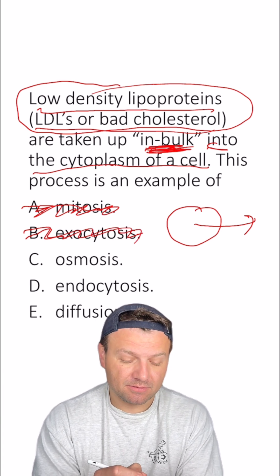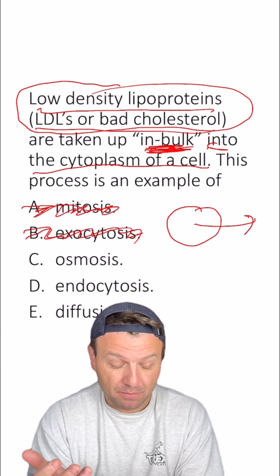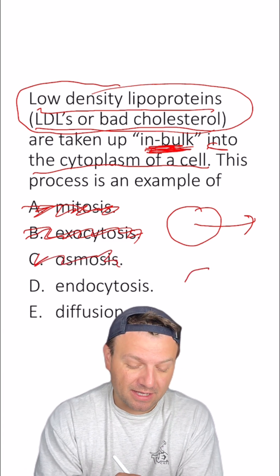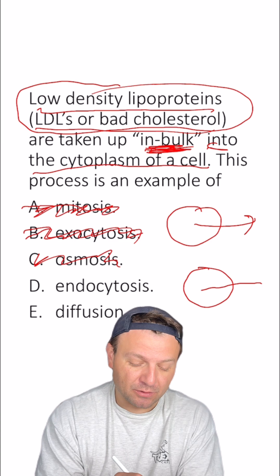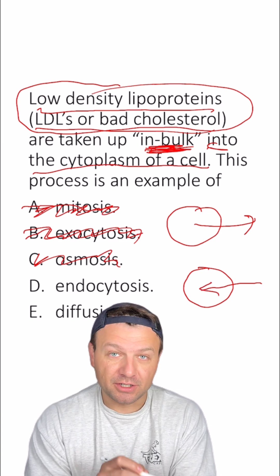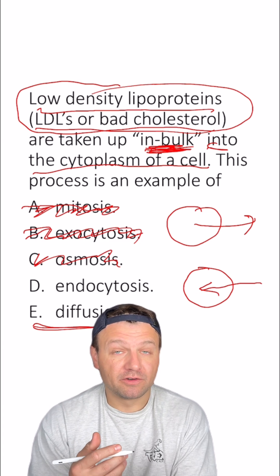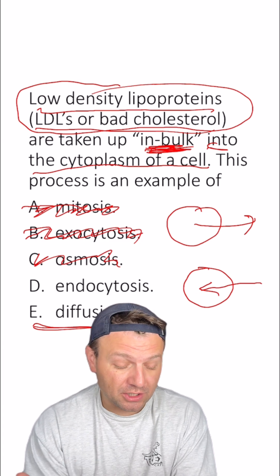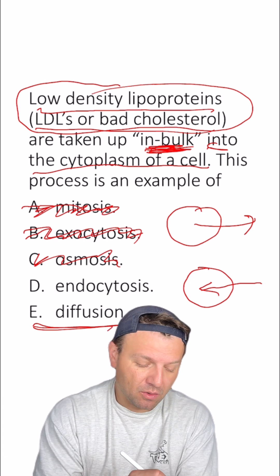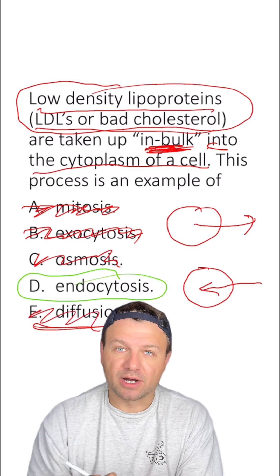C — osmosis. That's water going into the cell, but water isn't a large lipoprotein, so that's not right. D — endocytosis. That's active transport and that's when things go into the cell, so that sounds like our answer. E — diffusion. Diffusion is molecules moving from high to low concentrations, but they're typically small molecules, not proteins. So E is out. That's why D is the right answer.